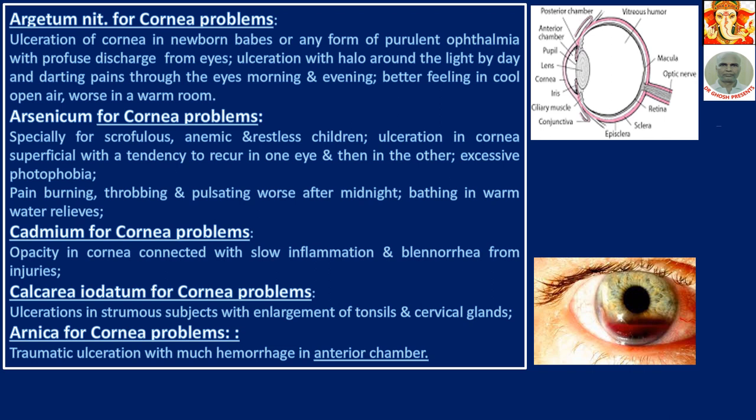Cadmium for cornea problems: opacity in cornea connected with slow inflammation and blenorrhea (excessive coming out of watery fluid) from injury. Calcarea Iodata for cornea problems: ulceration in scrofulous subjects with enlargement of tonsils and cervical glands.